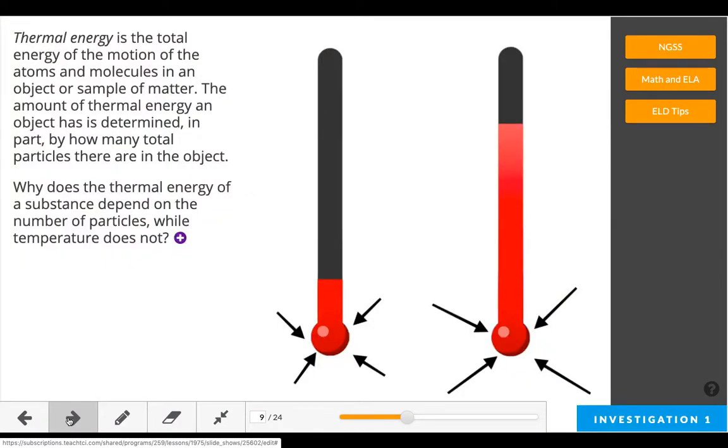Thermal energy is the total energy of the motion of atoms and molecules in an object or a sample of matter. The amount of thermal energy in an object is determined, in part, by how many total particles there are in the object. Remember learning that? Thermal energy is the total amount of energy in an object or substance. Why does the thermal energy of a substance depend on a number of particles, while temperature does not?